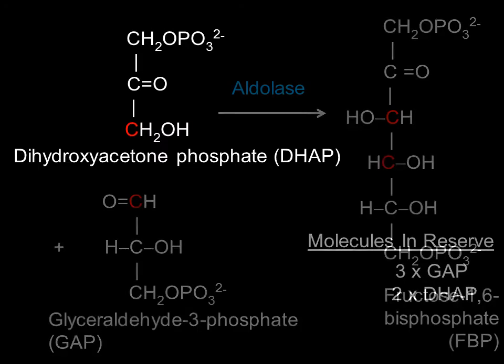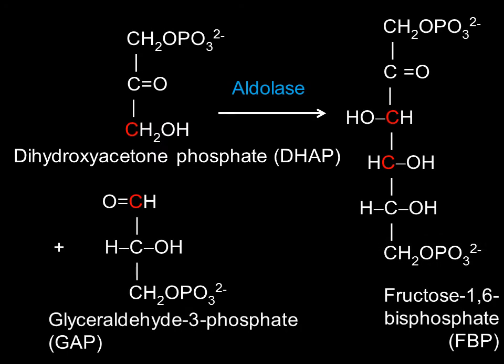One of the dihydroxyacetone phosphates will be coupled with one of the glyceraldehyde-3-phosphates still in reserve to form fructose-1,6-bisphosphate. This will be done by the enzyme aldolase.